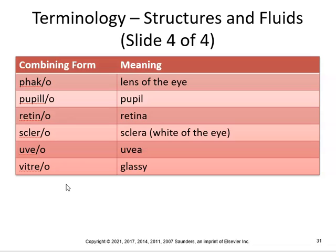Retin means retina — retinitis is inflammation of the retina. Diabetic retinopathy is a disease of the retina associated with diabetes. Scler means white of the eye — corneoscleral means pertaining to the cornea and scleral layers of the eye. Scleritis is inflammation of the sclera. You can see the -itis suffix — we use that a lot in medical terminology. Uv means uvea — uveitis is inflammation of the uvea, the vascular layer of the eye. Vitreous humor is the clear, watery jelly-like mass — the vitreous body that fills the cavity of the eyeball.